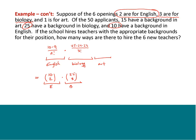Last one is art. For art, we have only one position open and 15 applicants. In terms of N choose K, that would be 15 choose 1. And 15 choose 1 actually just equals 15. When you only choose one, it simplifies that way.